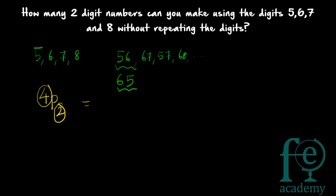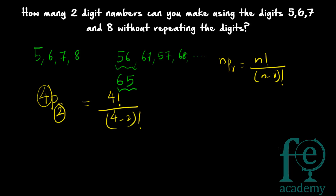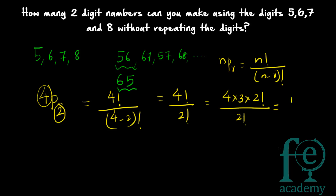The formula is nPr = n factorial divided by (n minus r) factorial. So 4P2 gives you four factorial divided by (four minus two) factorial, which gives you four factorial divided by two factorial. That equals four into three into two factorial divided by two factorial, which gives you twelve. So there are twelve two-digit numbers which can be formed using the digits five, six, seven, and eight.